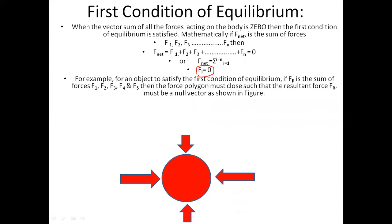For an object to satisfy the first condition of equilibrium, if there are forces F1, F2, F3, F4, and F5, the forces must form a closed polygon such that the resultant force R is a null vector. All forces cancel each other out — F1 cancels F3, F2 cancels F4 — and the resultant force equals zero.